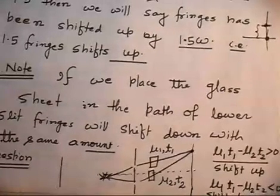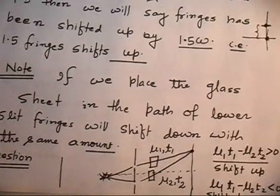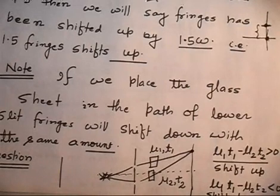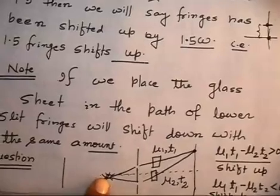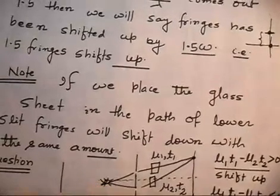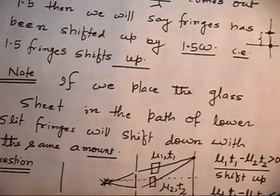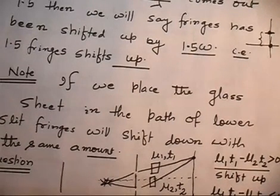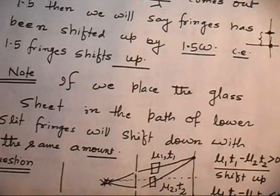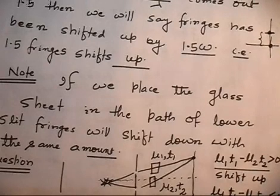I have gone slightly fast in this problem because my memory card only covers a certain amount of data. I think you are able to understand — things are very easy. To summarize: this is the theoretical effect of placing a glass plate in front of a slit. Glass on the upper slit shifts fringes up; glass on the lower slit shifts fringes down. We will now discuss the next problem.